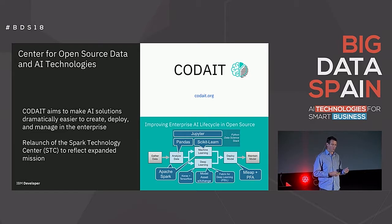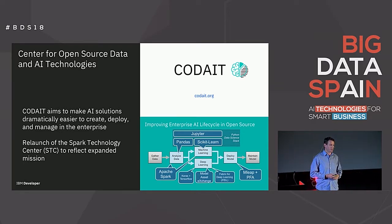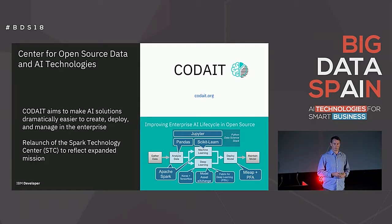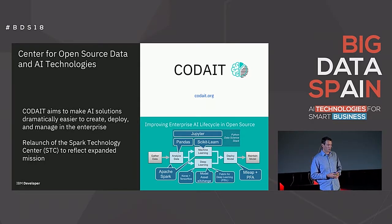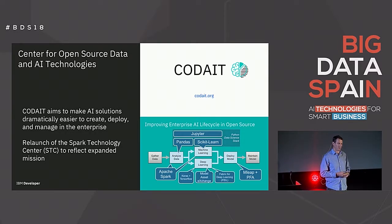That involves focusing on projects like Apache Spark, but increasingly the Python data science stack, including Pandas, scikit-learn, the deep learning libraries — TensorFlow, Keras, PyTorch, Caffe, and so on. A couple of other projects: the model asset exchange and the fabric for deep learning, which I'll mention just at the end.